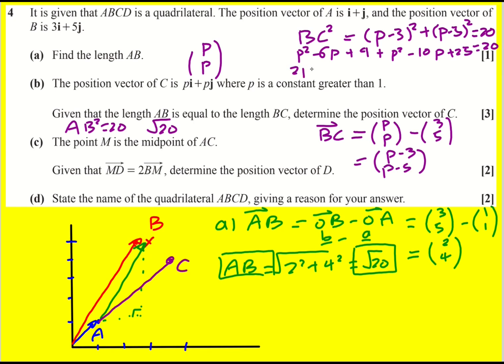That means 2p squared minus 16p, and the 9 and 25 give me 34 minus the 20 gives me 14. Divide through by 2. You can stick in your calculator, but I'm going to divide through by 2. p squared minus 8p plus 7 is 0. p minus 1 times p minus 7 is 0. So p equals 1, which I'm going to reject because p is greater than 1. You might want to write that down just to explain why you're rejecting it. Or 7.